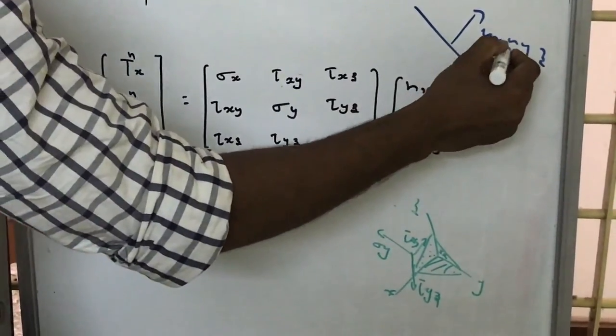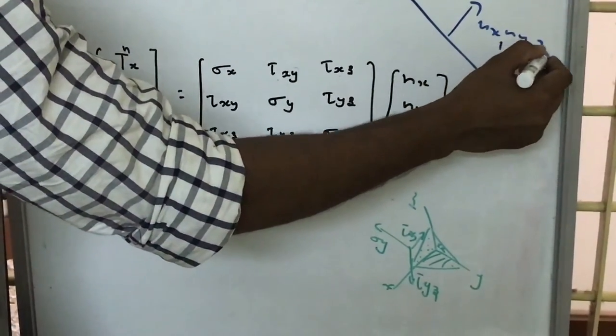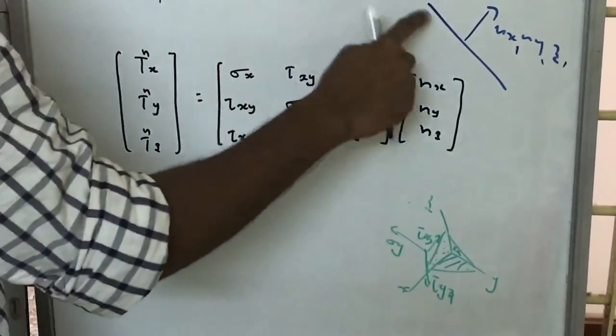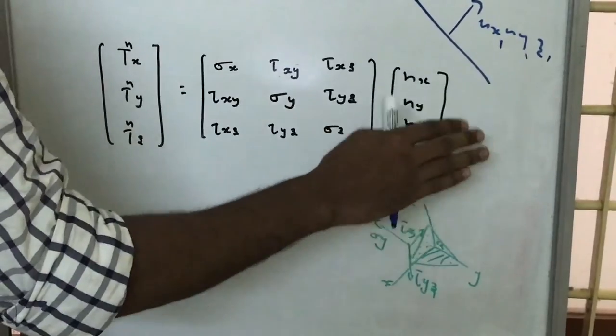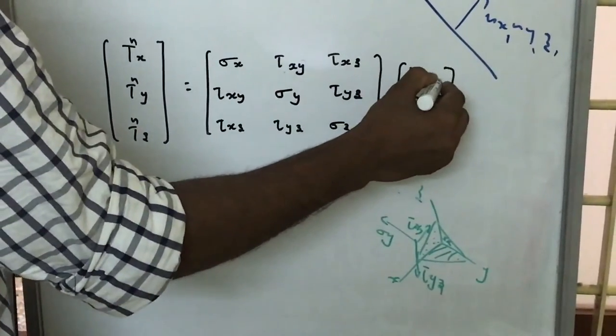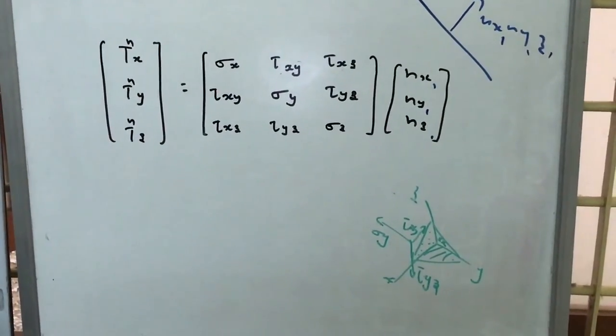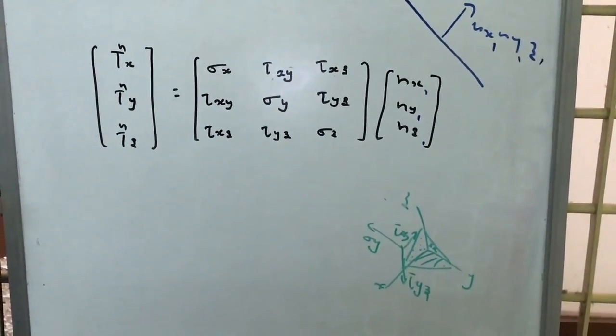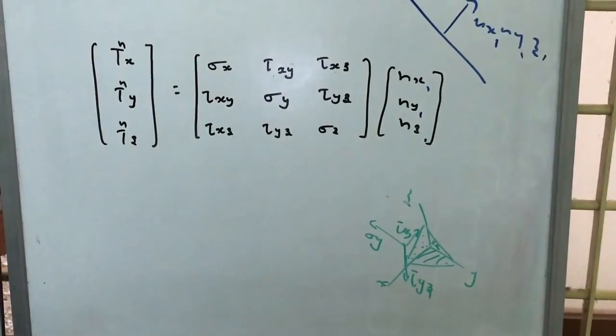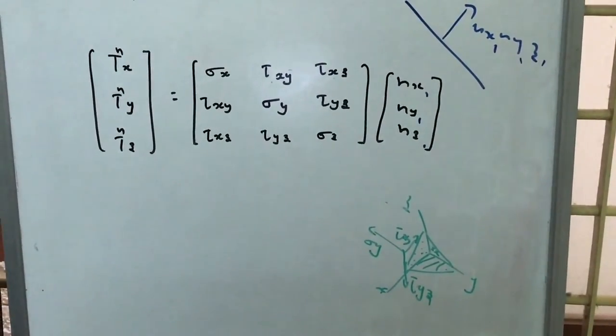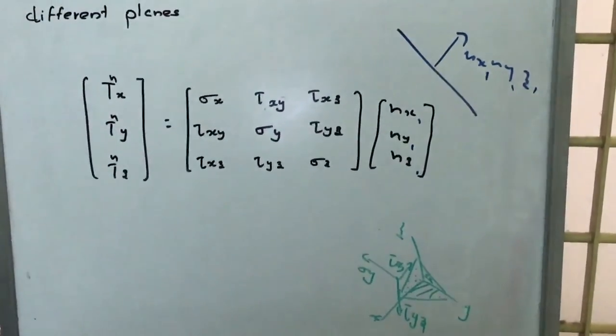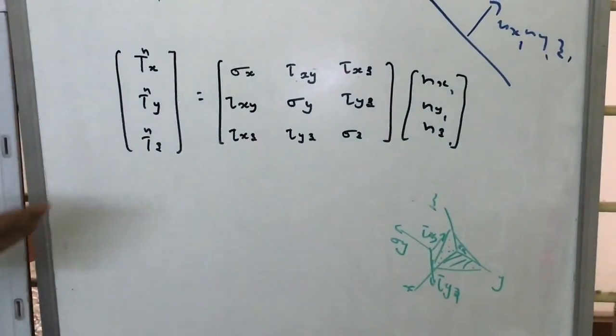So if we have another plane whose normal is nx1, ny1, nz1, and if we are asked to find the stress set in this particular plane, then what we have to do is we have to multiply the given stress matrix with nx1, ny1, nz1. So if we know the stress at three mutually perpendicular planes, we can easily find the stress set in a plane whose normal is given.